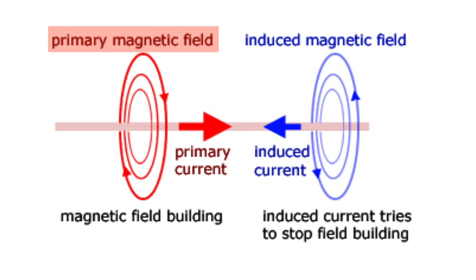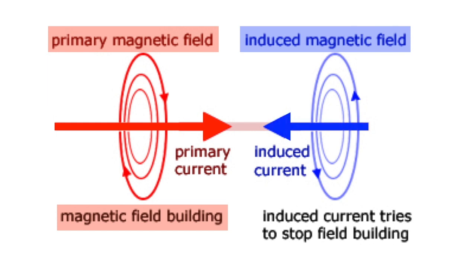You have a primary magnetic field when it's turned on and it's moving in one direction. That is a magnetic field that is building power. Then when you turn it off, you have an induced magnetic field in the opposite direction, and that induced current tries to stop the field from building.